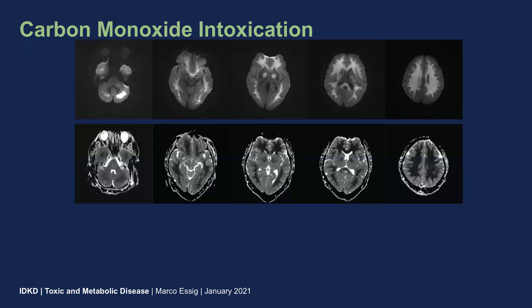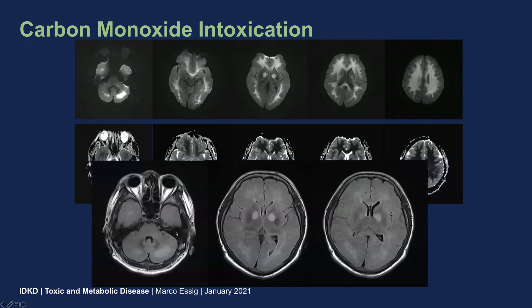I would like to show you two other cases of intoxication. This is a case of carbon monoxide intoxication. Like in our case with methanol intoxication, we have a subcortical leukoencephalopathy, which is more pronounced in this case, but the putamen and the basal ganglia are spared. However, we do see white matter changes in the corticospinal tracts. On the matching FLAIR, you see these signal abnormalities in the internal capsule as well as the subcortical global leukoencephalopathy.